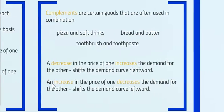Complements are goods used in combination: pizza and soft drinks, milk and cookies, computer hardware and software, airline tickets and rental cars, toothbrush and toothpaste. If two goods are complements, a decrease in the price of one increases demand for the other. For example, a decrease in the price of soft drinks shifts the demand curve for pizza rightward — if soft drinks are cheaper, you'll buy more of both because they go together.